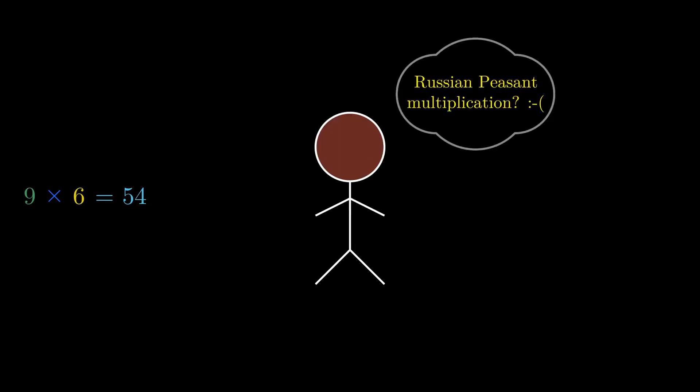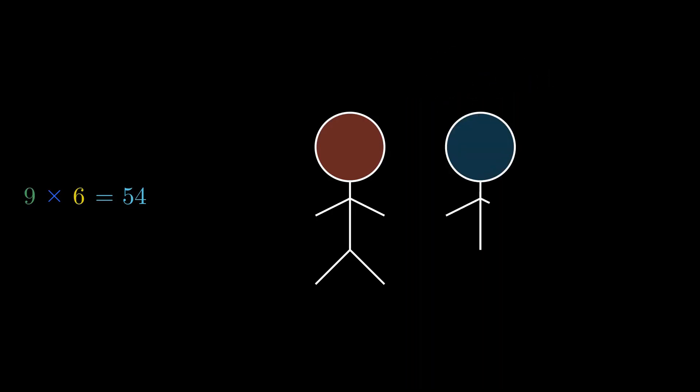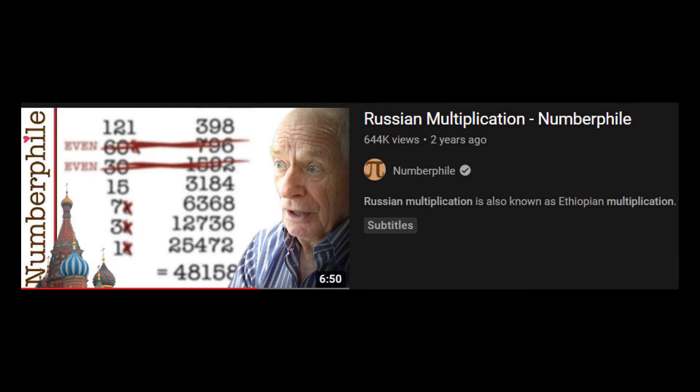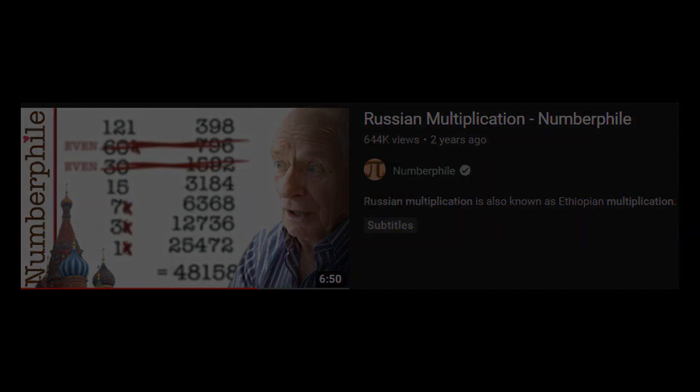This method is called Russian peasant multiplication, the name which my conscience quite disagrees with for the classism it employs. I came across a video by Numberphile, link in the description, where Johnny Ball talks about this method quite elegantly. However, the video doesn't quite go into the detail for why this method works.